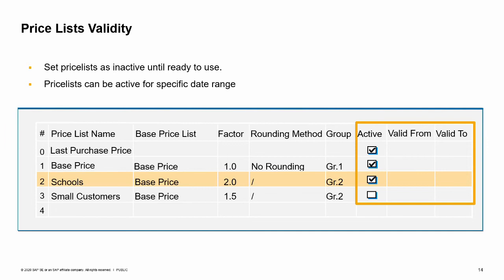If a marketing document refers to an inactive price list, such as in an order for a customer associated with an inactive price list, the item price is zero and the unit price field is shown as empty in the document row. When you add a document associated with an inactive price list, the system will warn you about the zero price. If an active price list has a date range, then the document posting date must fall within the date range, otherwise the price list will be considered inactive.